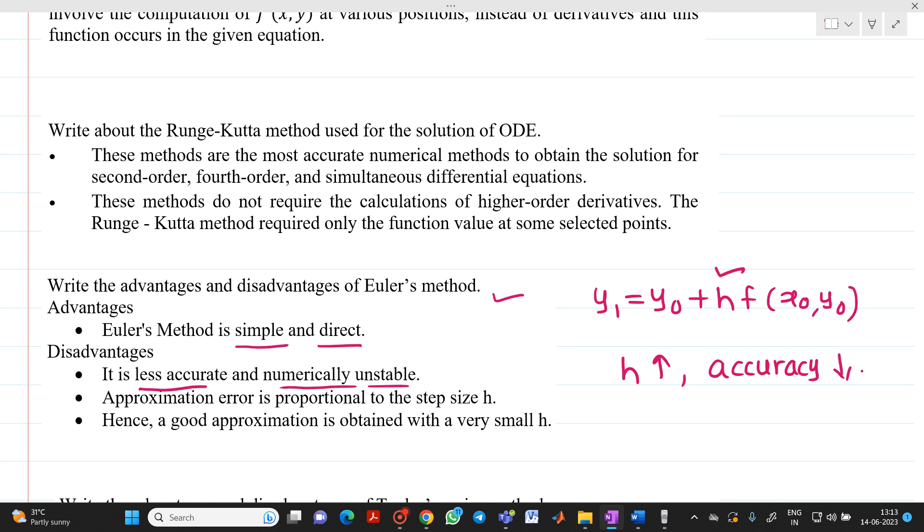The aim is to keep the value of h as small as possible in order to achieve accuracy. Here it is written: a good approximation is obtained with a very small value of h.